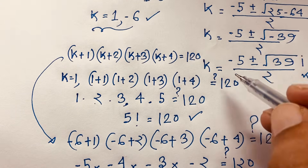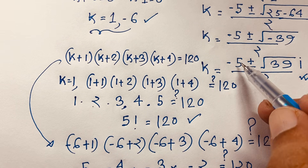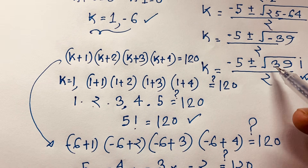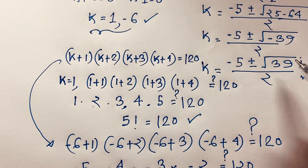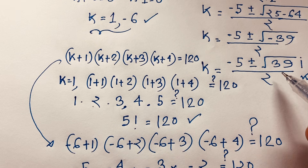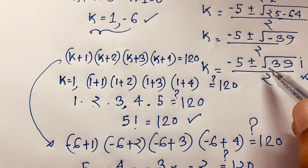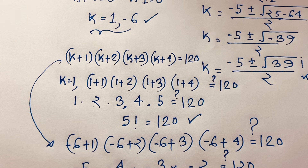The other two solutions are the complex numbers k = (-5 ± √39 · i) / 2. Thank you all! If you enjoyed this math problem, please subscribe to my channel for another interesting video. Goodbye, take care everyone!